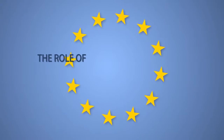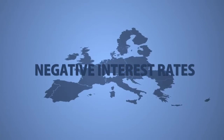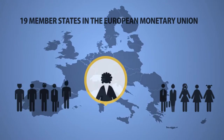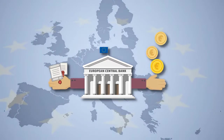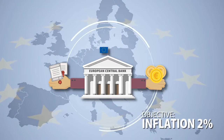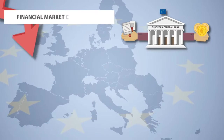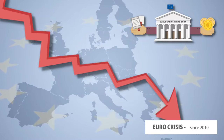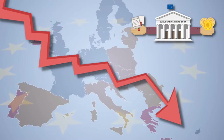The role of negative interest rates. The European Central Bank, ECB in short, is the central bank of 19 member states in the European Monetary Union. The primary objective of the ECB is price stability. The financial and economic crisis in 2007 and 2008 led the European economies into recession. In response, the ECB implemented monetary policy measures to stabilize the Eurozone.